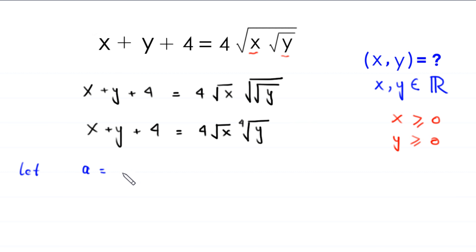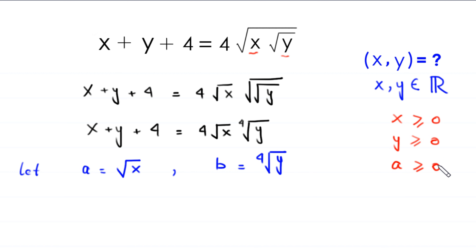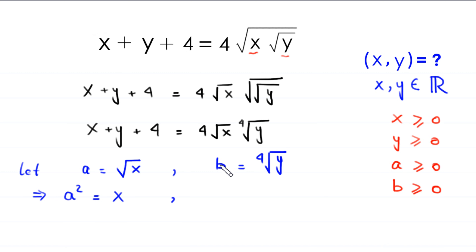We suppose that a is equal to the square root of x, and b is equal to the fourth root of y. Because x is greater than or equal to 0, a must be greater than or equal to 0. Since y is greater than or equal to 0, b must also be greater than or equal to 0. Squaring both sides gives a squared equals x, and taking the fourth power gives b to the power 4 equals y.